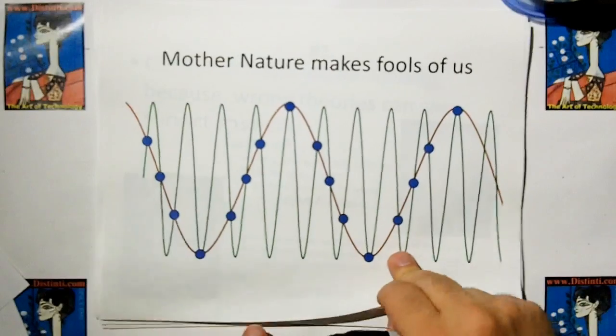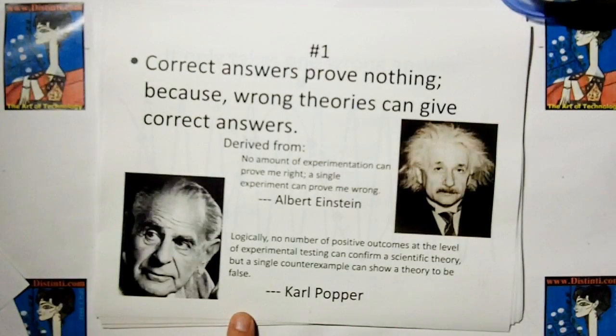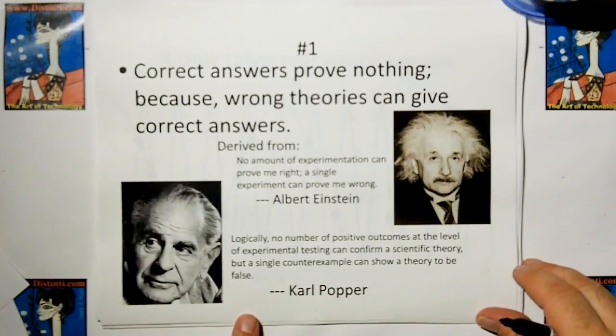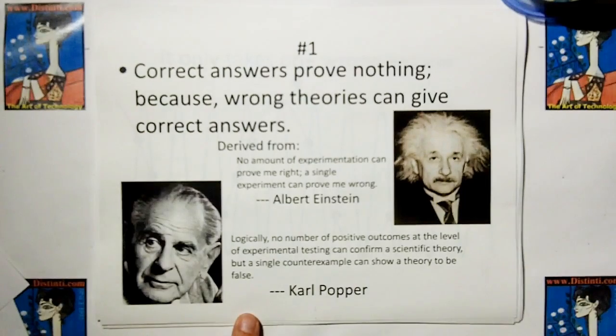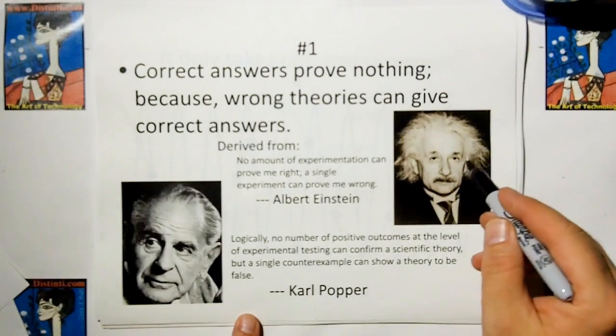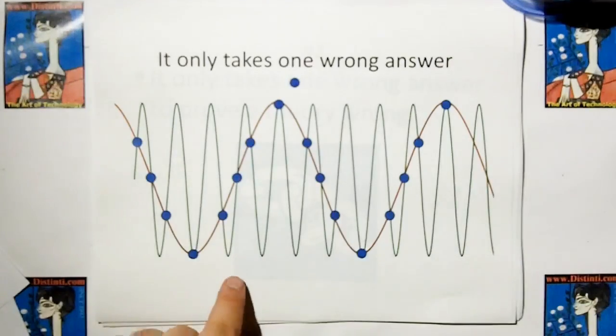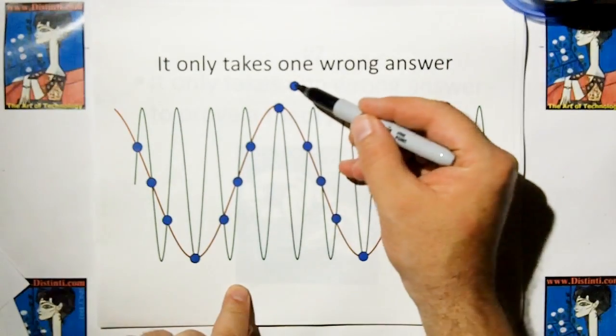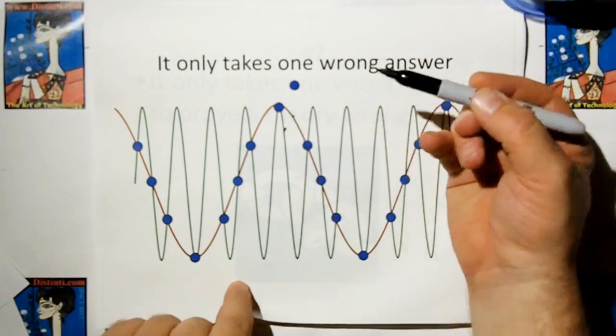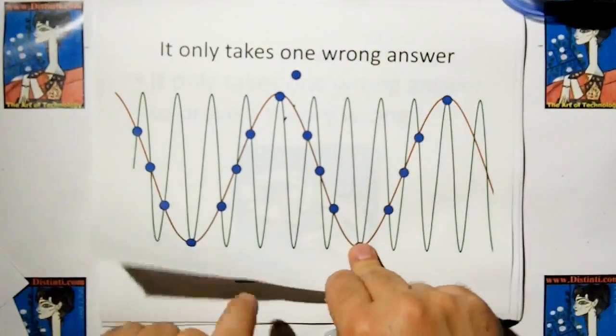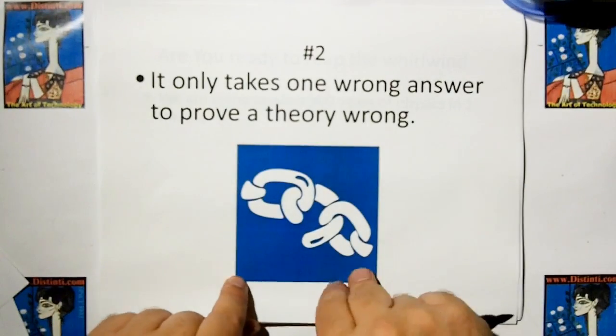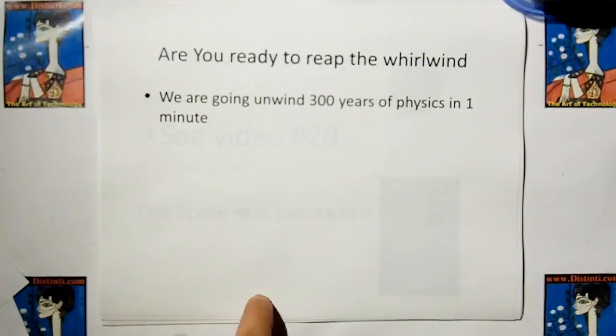So one of the problems we have with mother nature is that correct answers can never prove a theory right, so correct answers prove nothing. But it only takes one wrong answer to prove a theory wrong. Wrong answers are the most powerful thing we've got working for us.